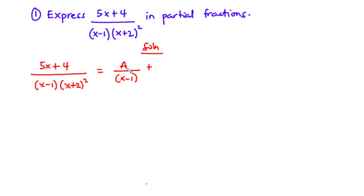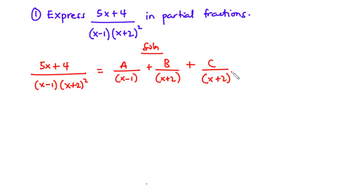So because we already have A, that's going to be B over x plus 2 and then C over x plus 2 all squared, where A, B, and C are all constants. To express this rational function into partial fractions, we need to find the values of A, B, and C.